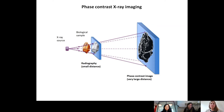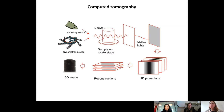Could you explain the principle of computer tomography? So, shortly, computer tomography is a 3D imaging technique. We start from a series of 2D images that are called projections, acquired by rotating the sample at different illumination angles. And afterwards, we can apply a reconstruction algorithm to visualize the sample in 3D.